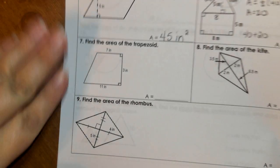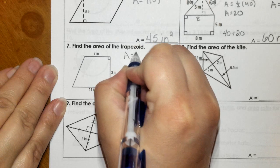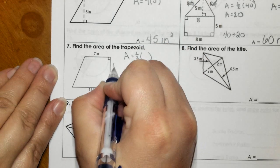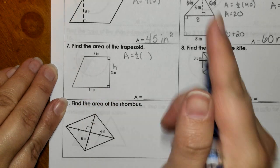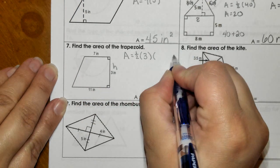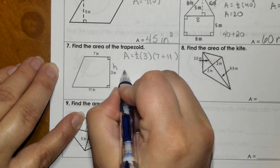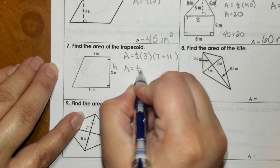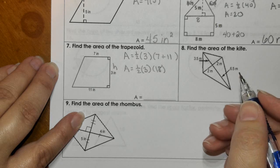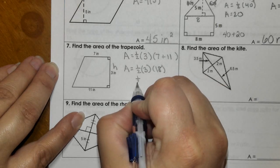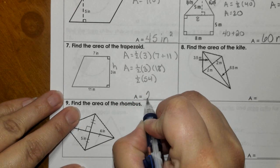For number seven, we have a trapezoid. So that would be one half times your height. The height would be the distance between the two bases. This is base one, this is base two. So the height is 3 times the sum of the bases, so 7 plus 11. So 3 times 18 gives me 54, and then half of 54 is 27.